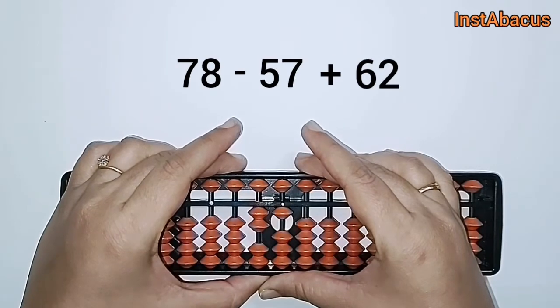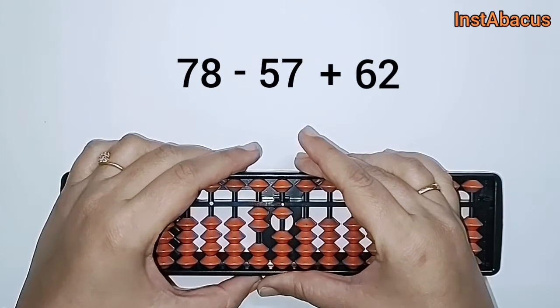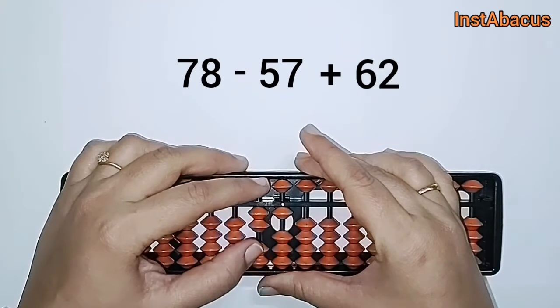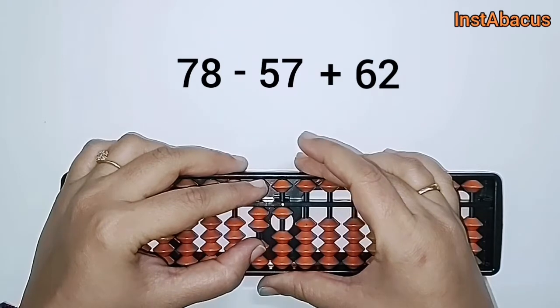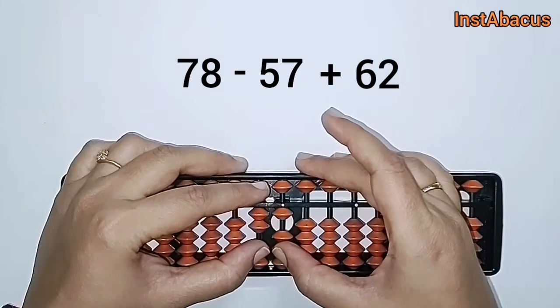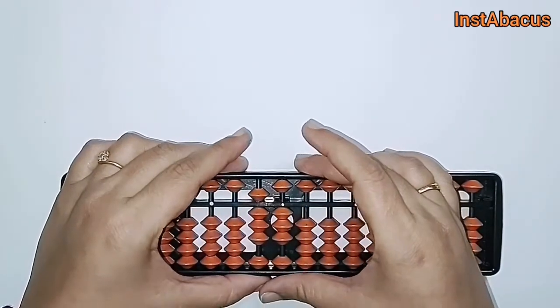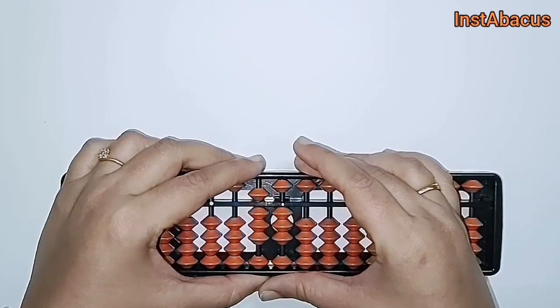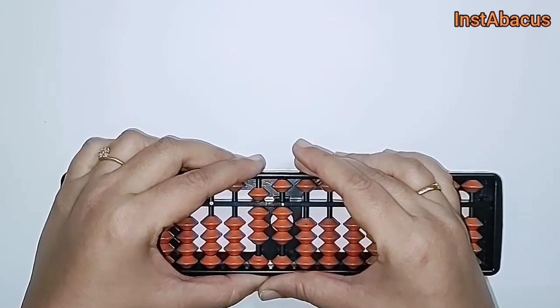There we go. Now we have to add 62. So 6, that is one heavenly and one earthly bead here in the tens column, will move towards the answering bar along with these two earthly beads. So our answer is 83. That's right.